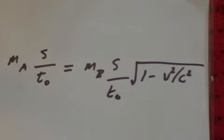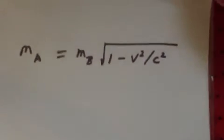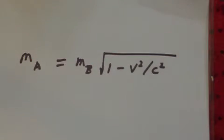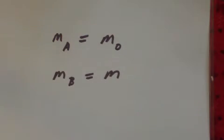Cancelling out, we get... And, if we swap the frame of reference, this gives us the mass variation equation in its usual form.